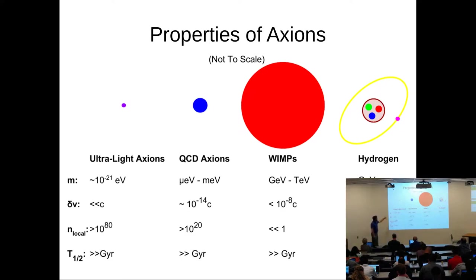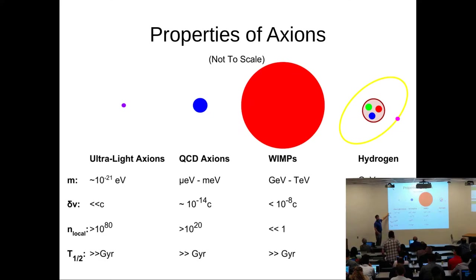I won't be talking about the ultralight axions - I think we're going to have another talk in this session about them. For those, we're at the mass scale where the de Broglie wavelength is of astronomical interest.